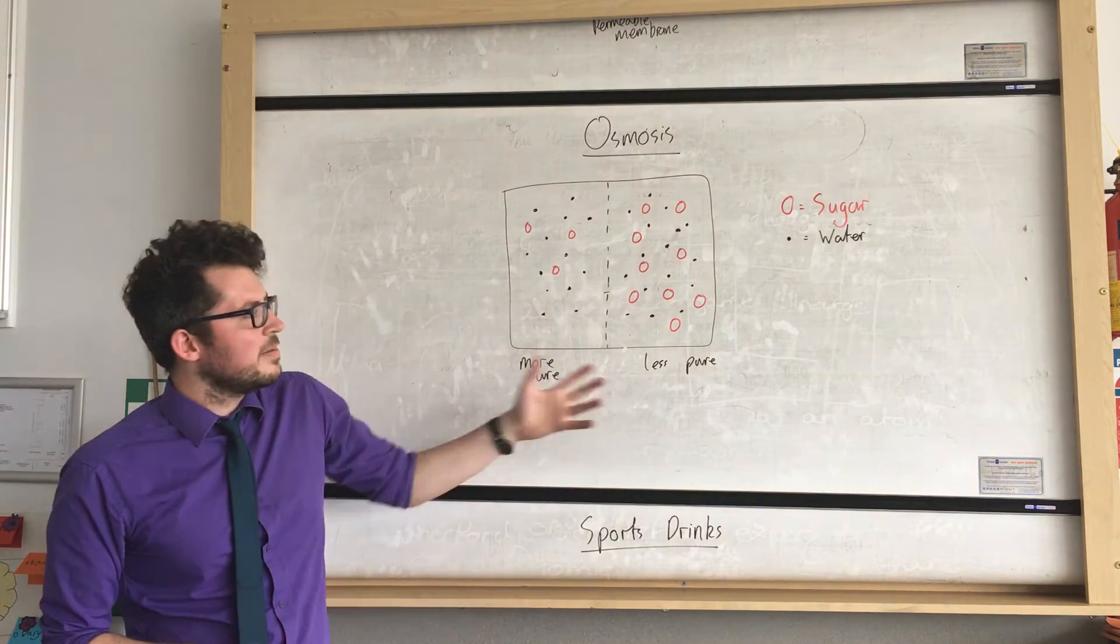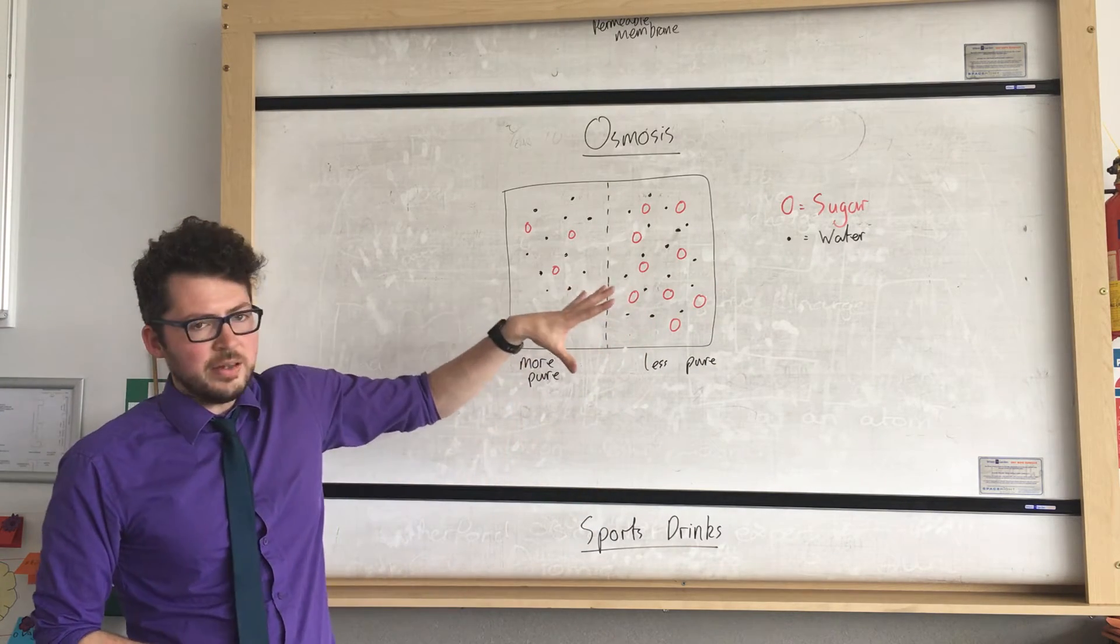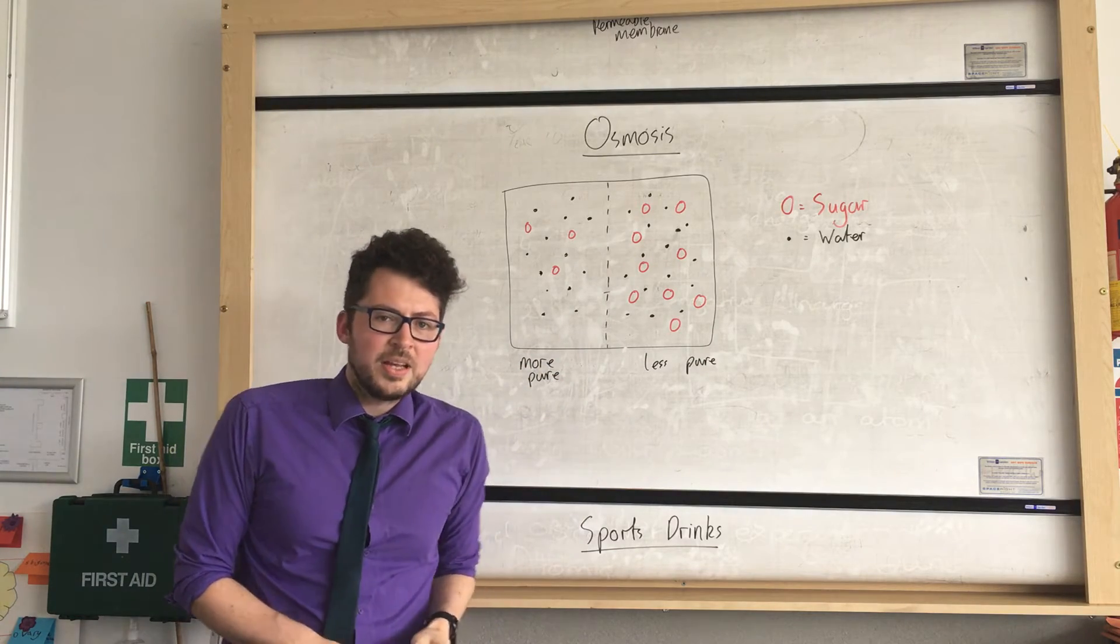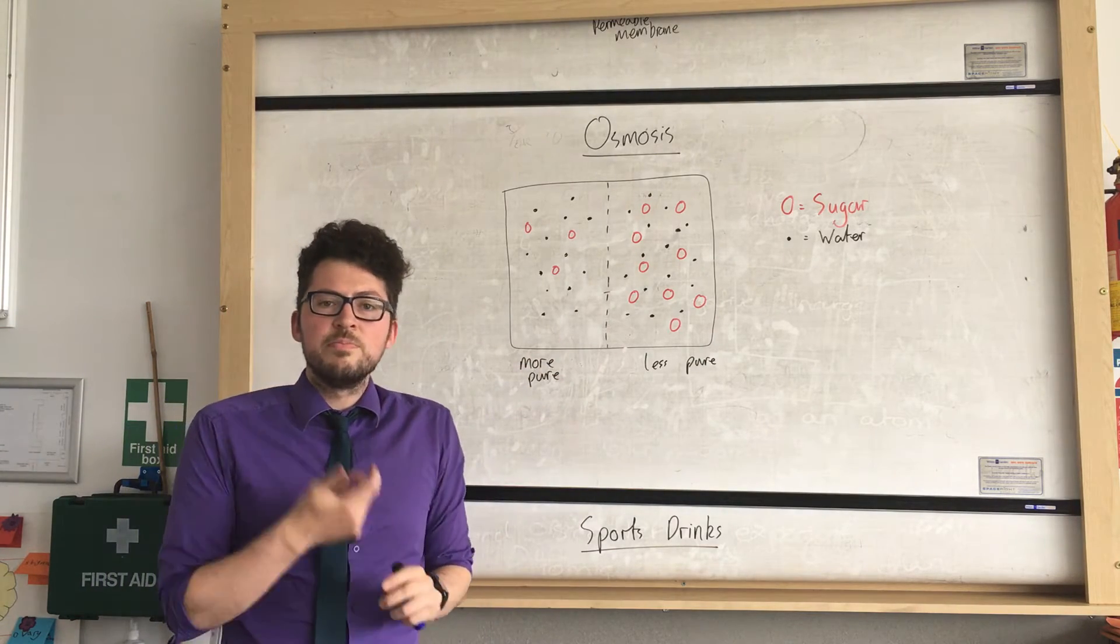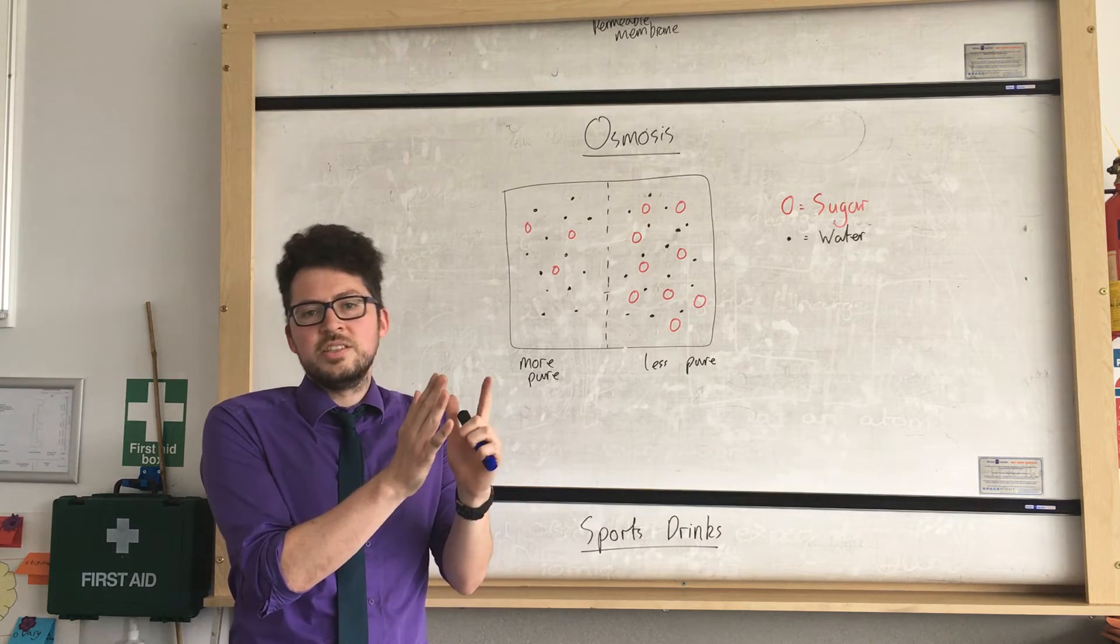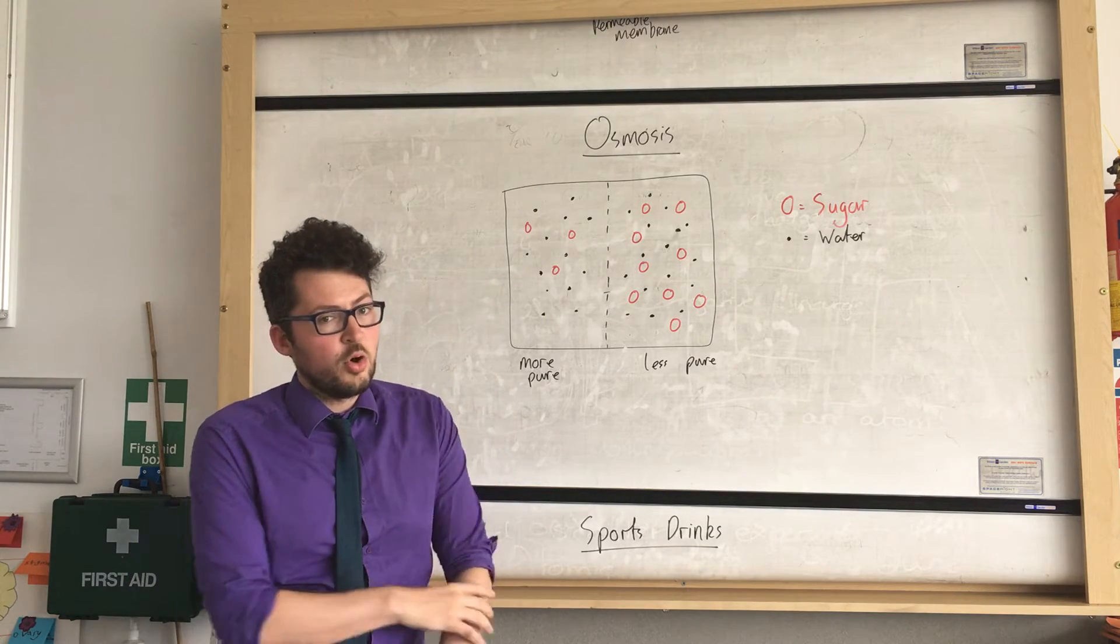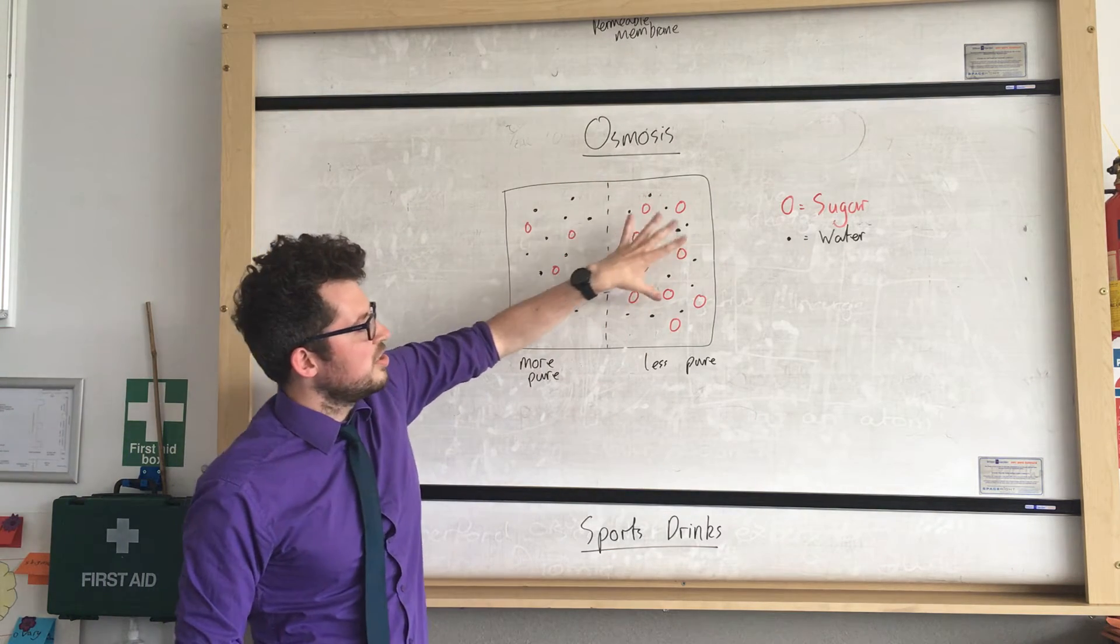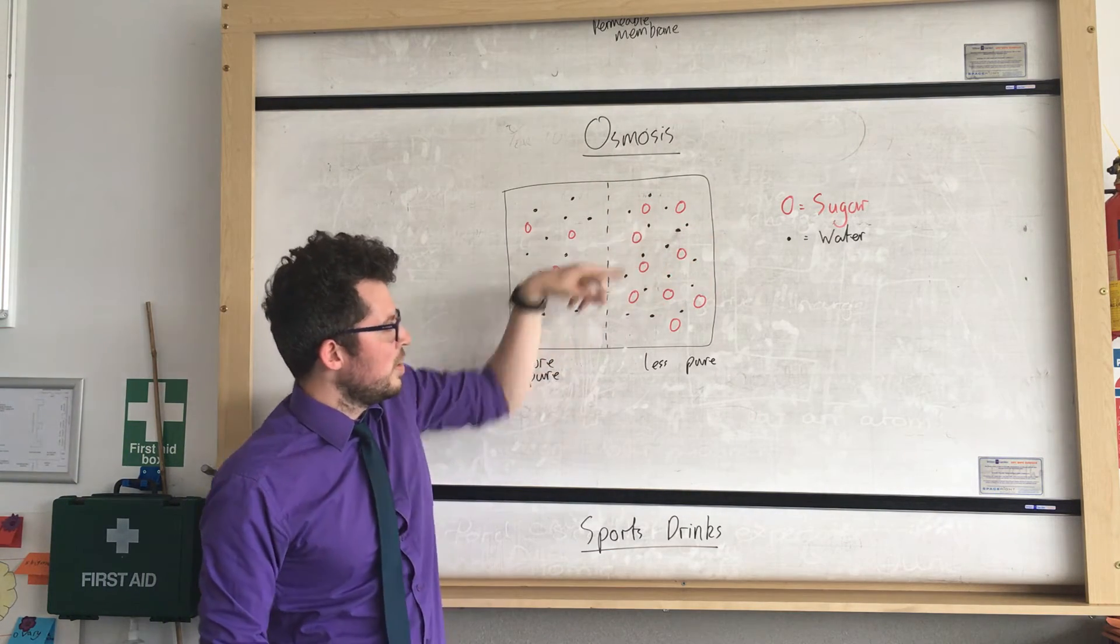So what does it mean more or less pure? Now in this example we're just going to use sugar as my example of something that will make water less pure. So water will be impure if other materials are dissolved in it. If I had a cup of water with nothing dissolved in it, that would be perfectly pure. So in this example my sugar, the red particles, are dissolved in the water which are the little black dots.